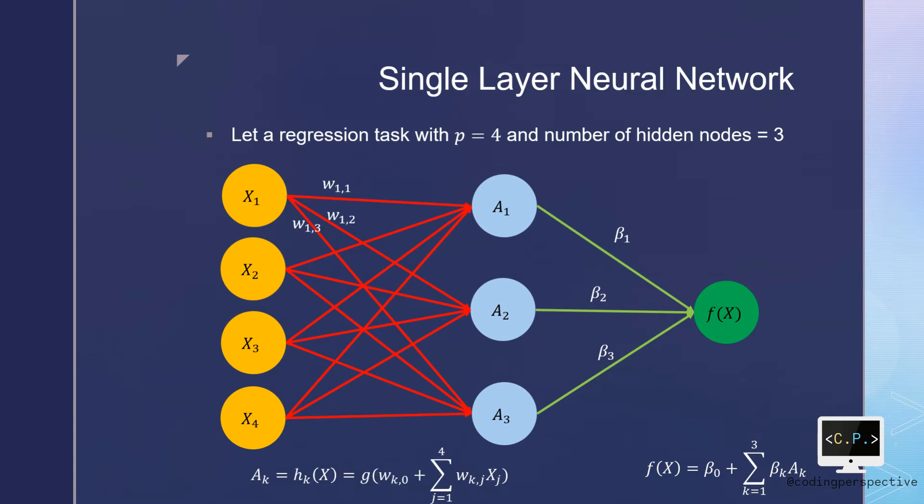According to the model, each ak is calculated as wk0 plus wkj times xj, sum over j's. Note that we have a nonlinear activation function g that is specified beforehand.